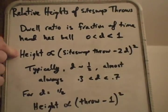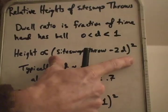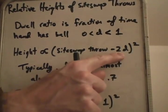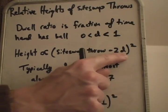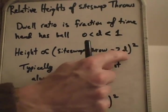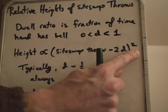The height is proportional to (siteswap throw value minus 2 times the dwell ratio) squared. The 2 is because we have two hands in the vanilla siteswap. The dwell counts twice. And the square is because gravity is an acceleration, so distance is related to time squared.